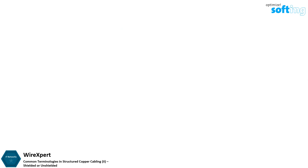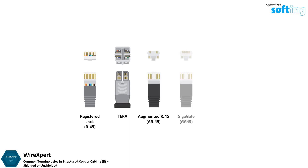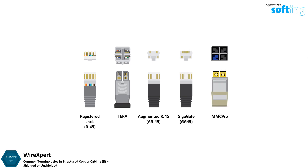There are many different types of connector interfaces for terminating to a cable. Examples of connectors include but are not limited to: Registered Jack or RJ45, Tera, Augmented RJ45 or ARJ45, Gigagate or GG45, and more recently the MMC Pro.